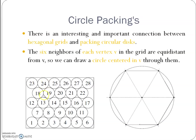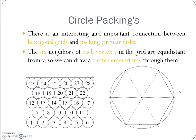From the diagram, you will find that from a hexagonal grid, the center — called vertex v — if connected with the six neighbor vertices of the hexagonal grid, will produce a circle. This is called circular packing.